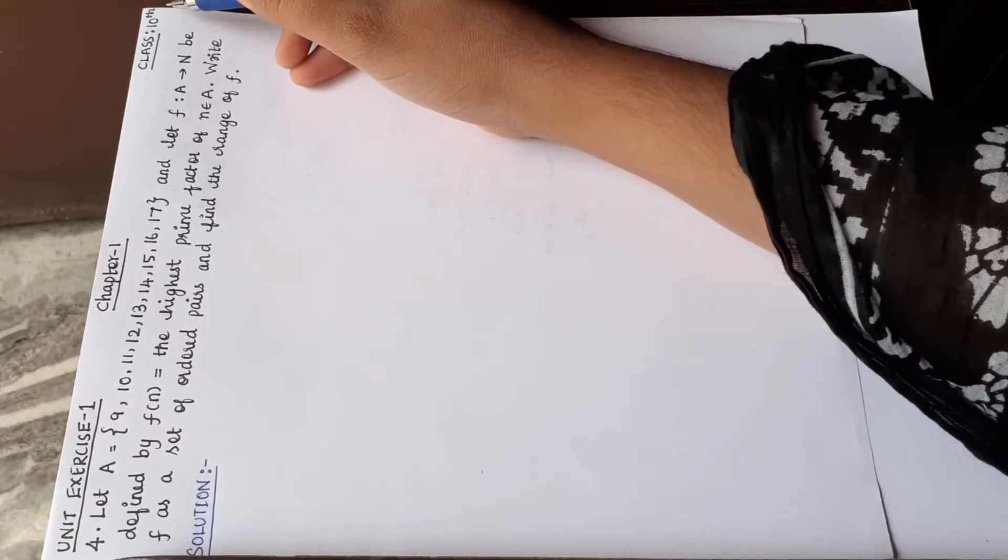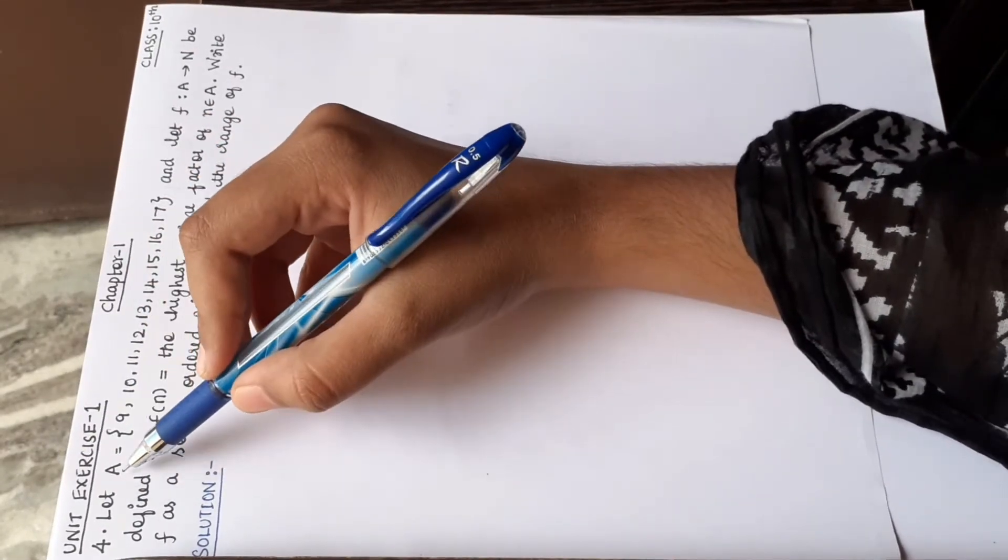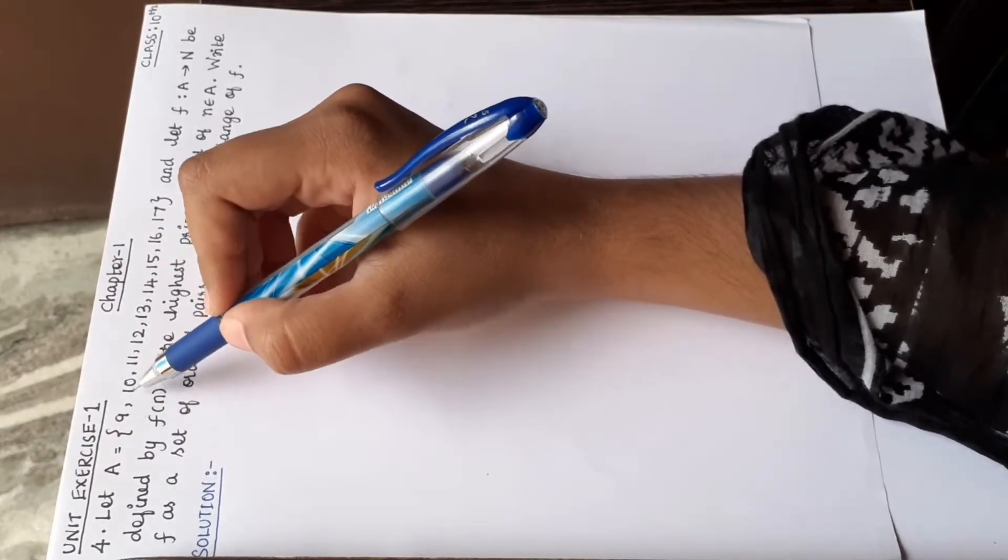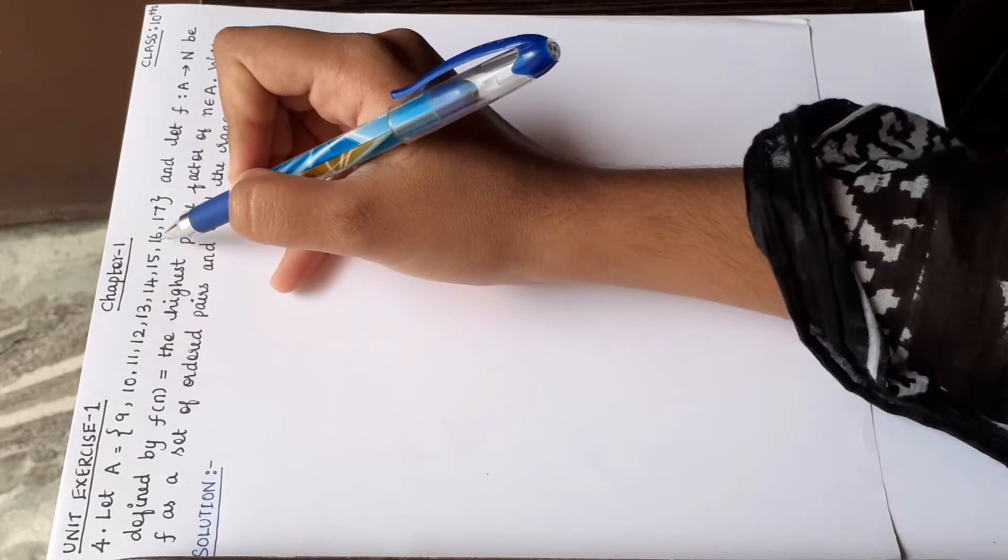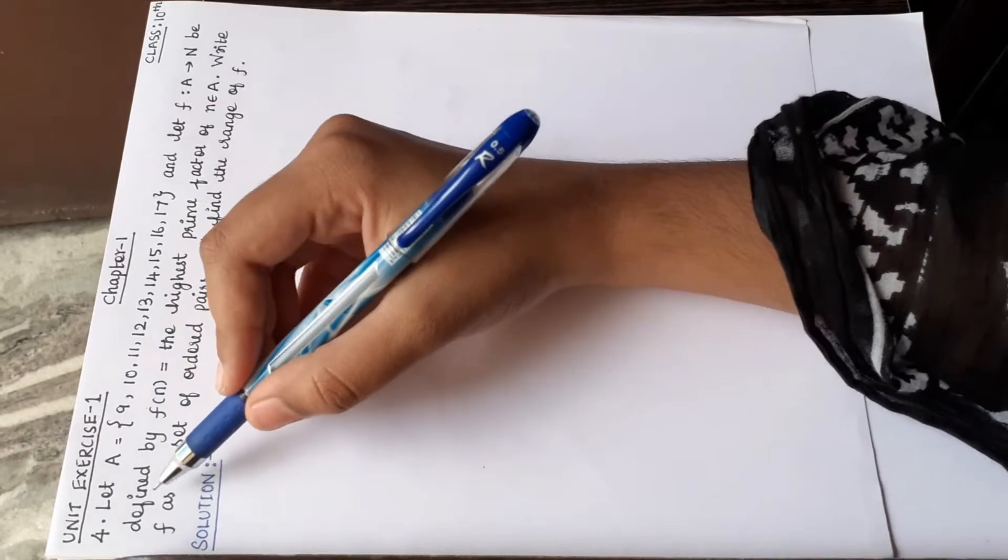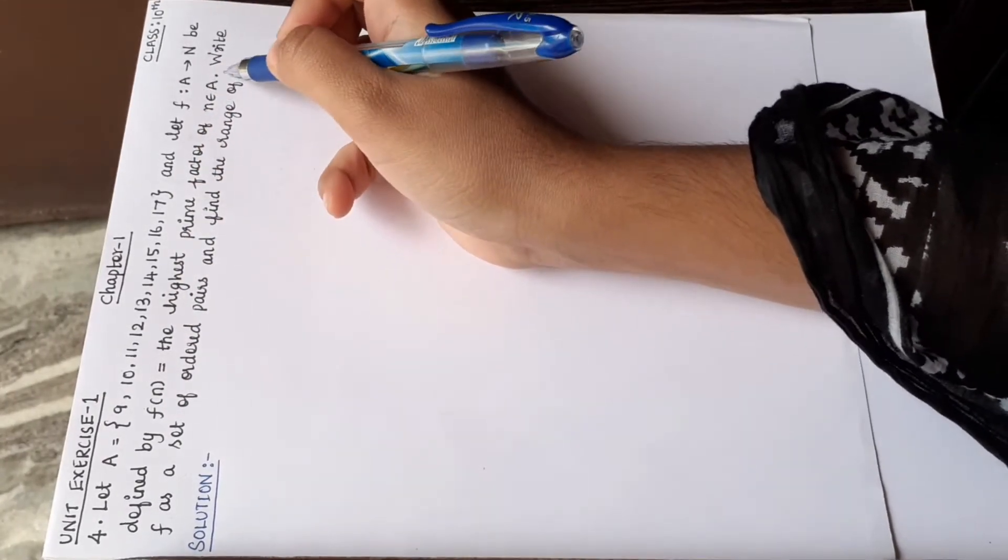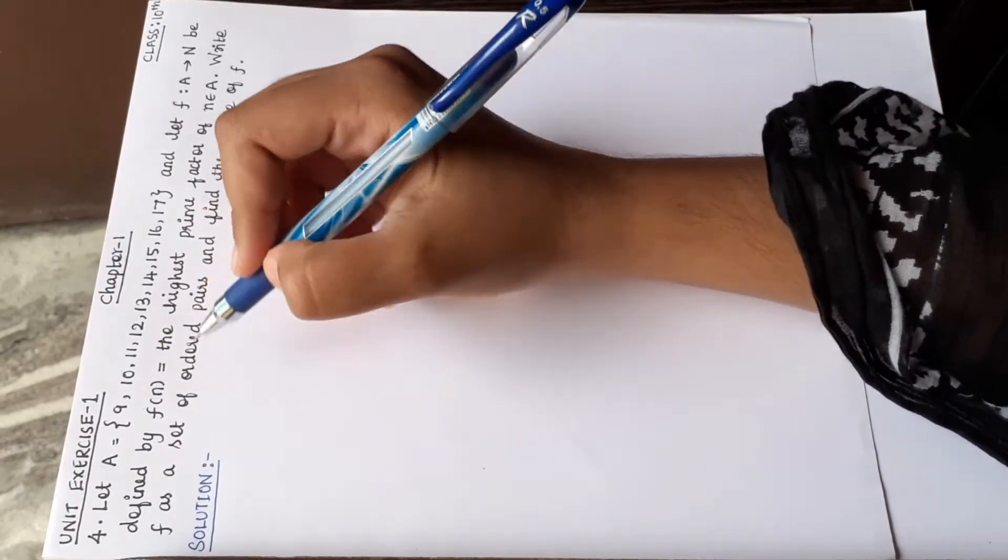Welcome to Rifasmax 10 standard chapter 1 unit exercise 1 left 4th one. Let A is equal to set 9, 10, 11, 12, 13, 14, 15, 16, 17, and let f is a function from A to N be defined by f of n is equal to the highest prime factor of n in A. Write f as a set of ordered pairs and find the range of f.